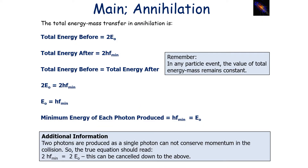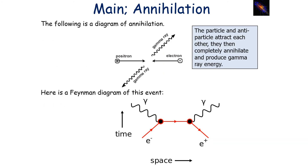In terms of energy in annihilation: the total energy before is 2E₀, where E₀ is the rest energy. The total energy afterwards is 2hf. Since total energy before equals total energy after, 2E₀ = 2hf, and the twos cancel, so the minimum energy of each photon produced in annihilation equals hf = E₀ — the rest energy of the original particle or antiparticle.